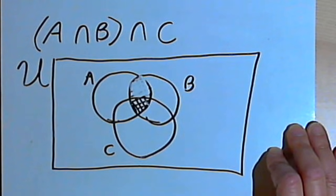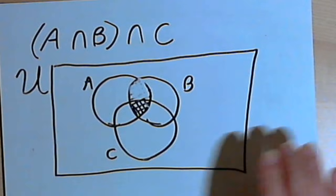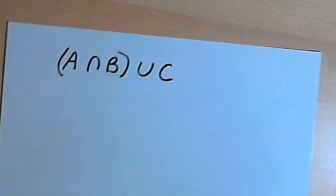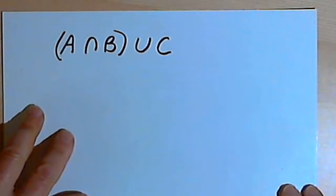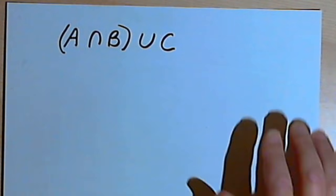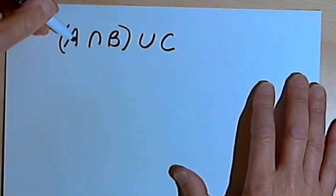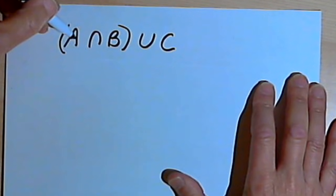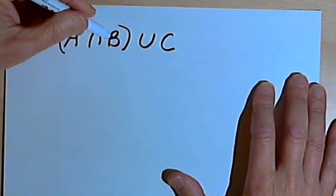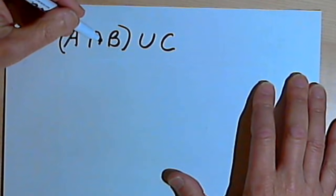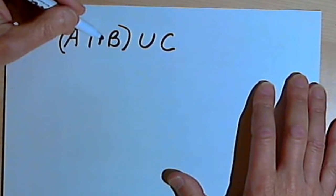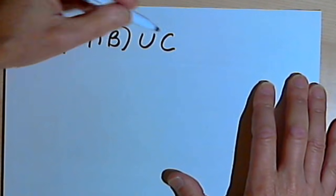Let's compare that with something else. Here, once again I'm starting with the intersection of sets A and B, but then I want to take that and have the union of that with set C.